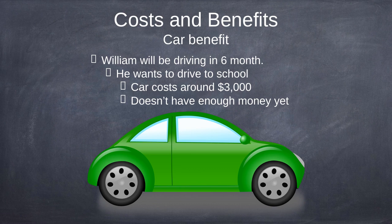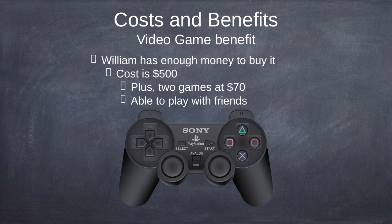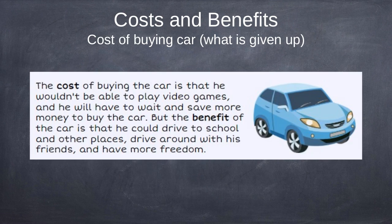William will be driving in six months and wants to drive to school. A car costs around $3,000 but he doesn't have enough money yet. He wants a car but understands he can't afford it right now. William does have enough money to buy a video game — the cost is $500 plus two games at $70 each — and he'll be able to play with friends immediately. The benefit of the car was that he'd be able to drive to school, so we weigh the cost and the benefits.